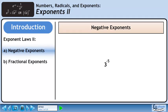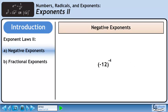In this power, 3 is the base and minus 5 is the exponent. The exponent becomes positive if we bring the power to the denominator. Now we have a power with a base of minus 12 and an exponent of minus 4. The exponent becomes positive if we bring the power to the denominator.